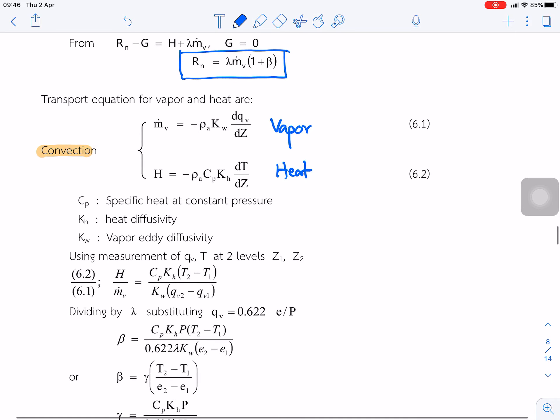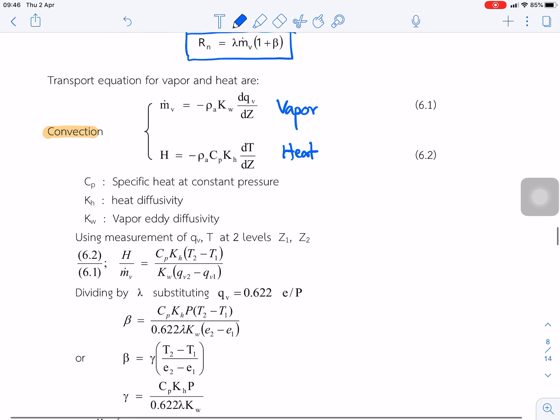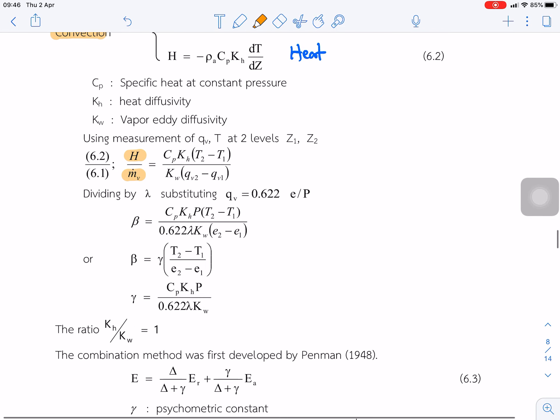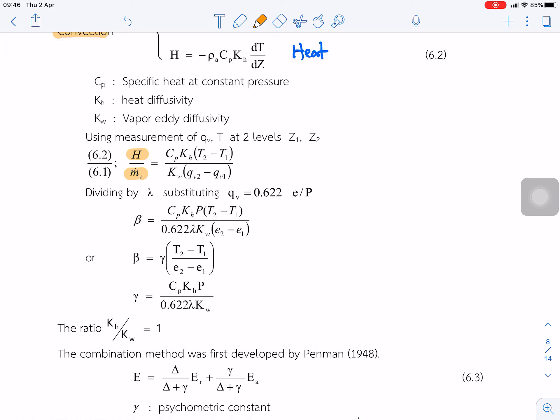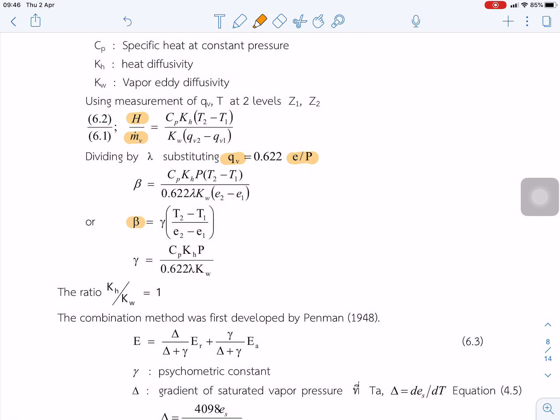So we can find the ratio of vapor and heat divided by vapor. We got this equation, and we substitute qb in term of the Ea/P. Finally, we got the equation of beta. It's a function of gamma. And then we have the equation of gamma. We're going to use this for the next step.